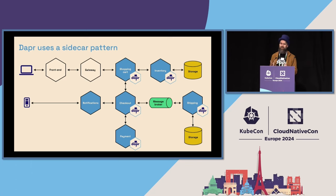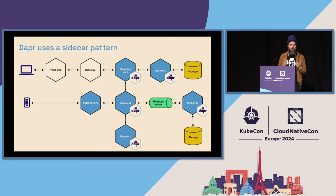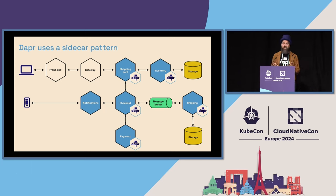The sidecar takes care of the heavy lifting, so you just write your business logic in any language you want in your application, and the Dapr sidecar will take care of the security, the observability, and the resiliency.